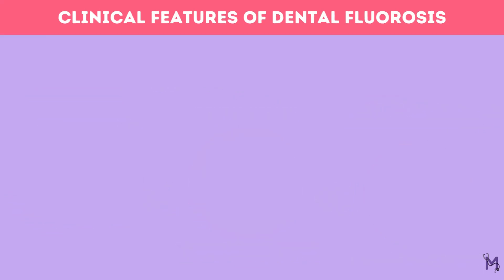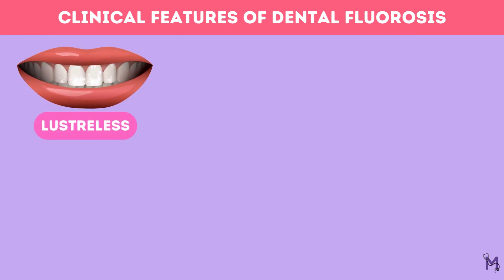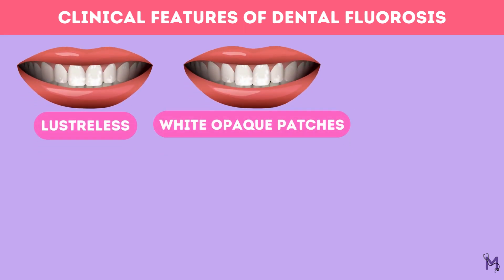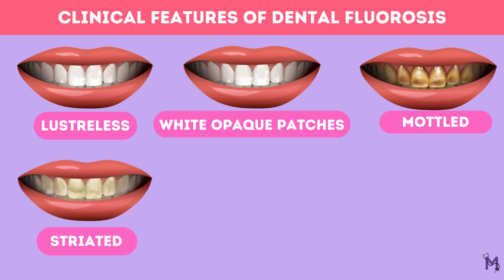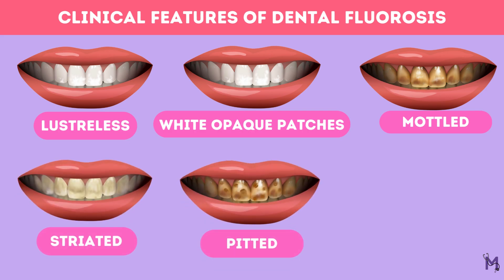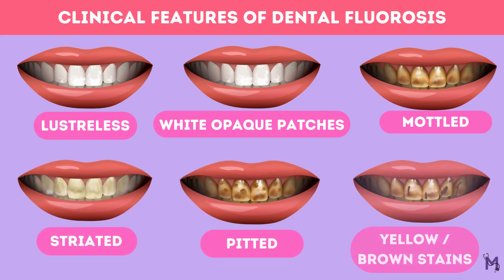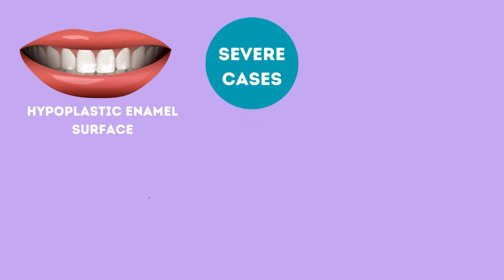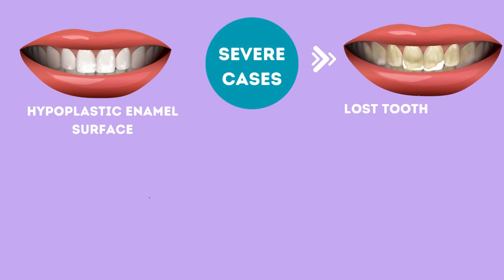Dental fluorosis has varied clinical features. It's usually lusterless, opaque white patches in the enamel which may become mottled, striated or pitted. These mottled areas may get stained yellow or brown. Sometimes, hyperplastic areas may also be present on the enamel surface to such an extent in severe cases that the normal anatomical structure of the tooth is lost.